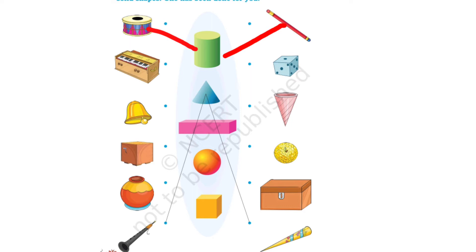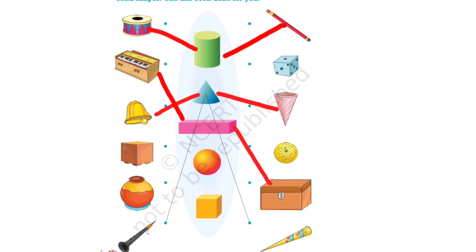For cone, we have bell and ice cream cone — both are similar. Next, for cuboid shape, we have harmonium and a wooden music box which is in cuboid shape. For sphere shape, we have pot and a ball — both the pot and ball are in sphere shape. The last one is for cube shape: there is a music box in cube shape and we have a dice — dice is also in cube shape.